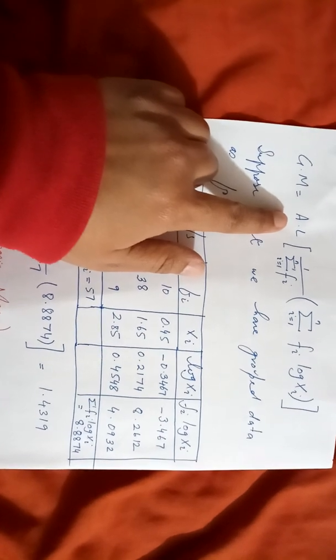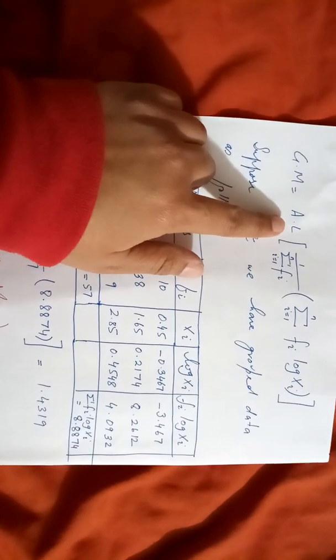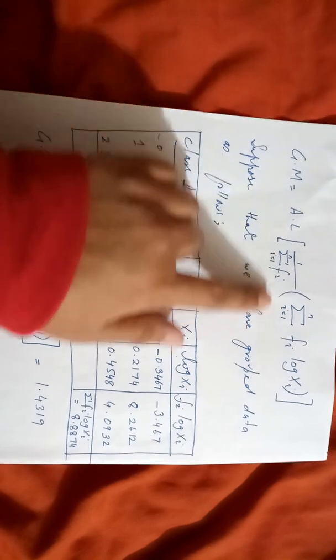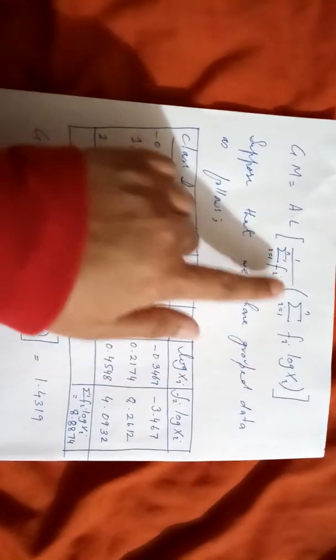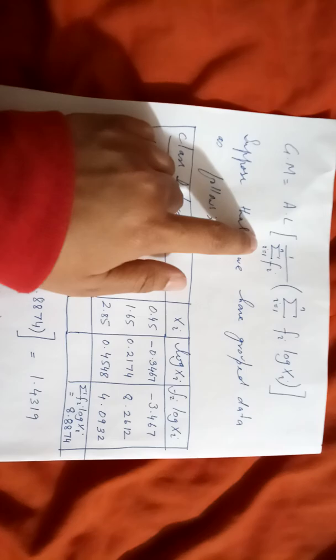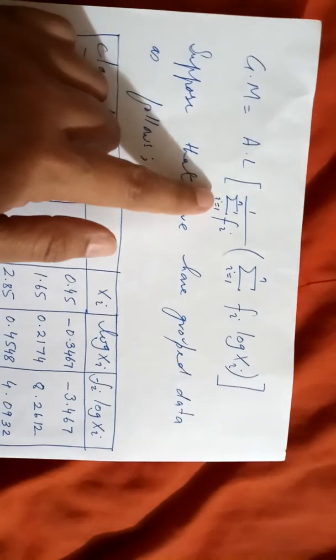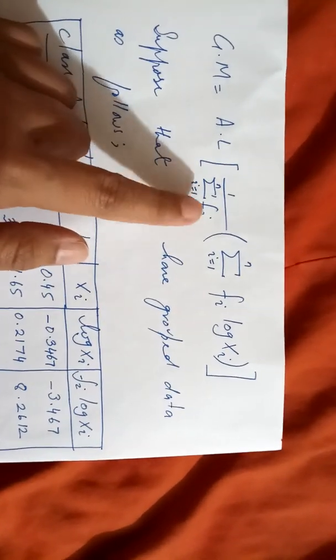Now since we have this grouped data, antilog, we have to take summation of f log x divided by summation f. If you are confused by i is equal to 1 till n, then you will not be confused.